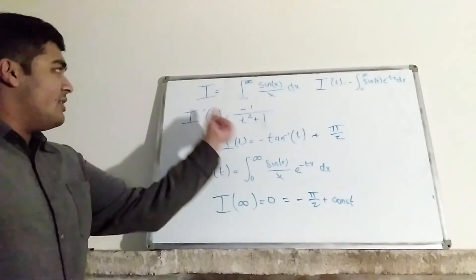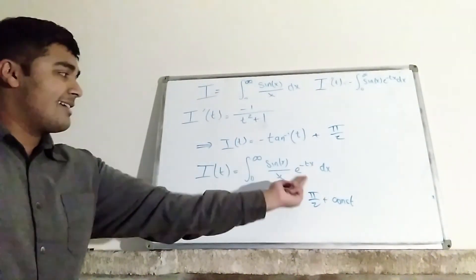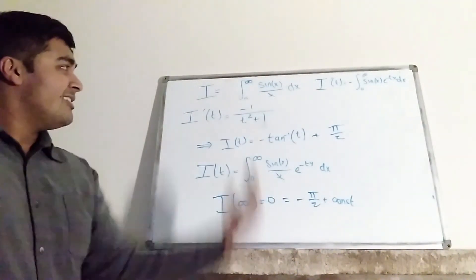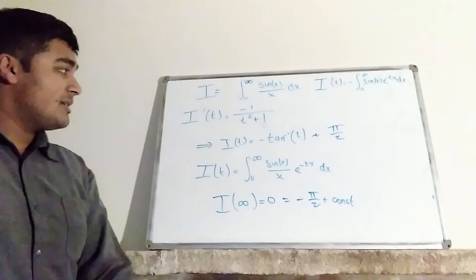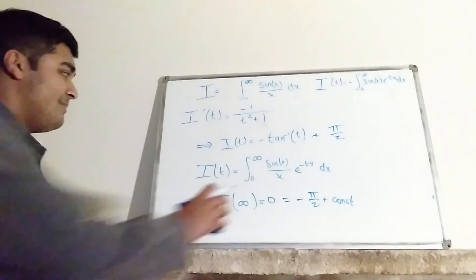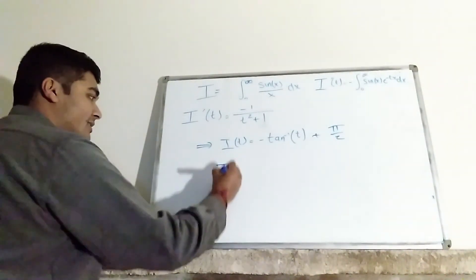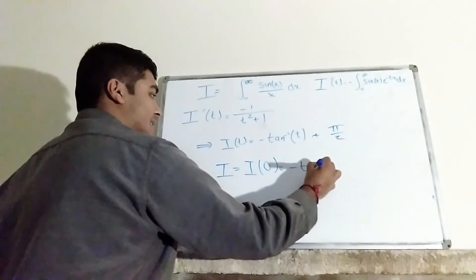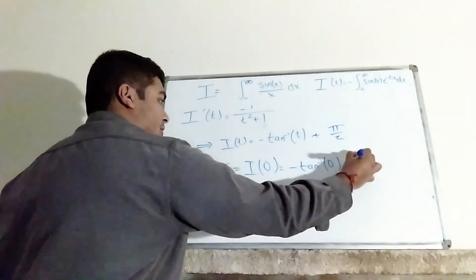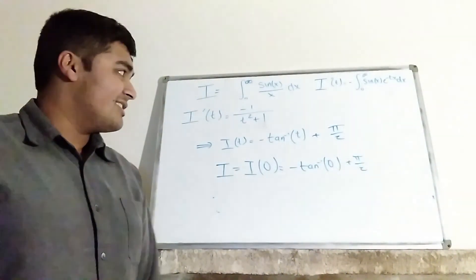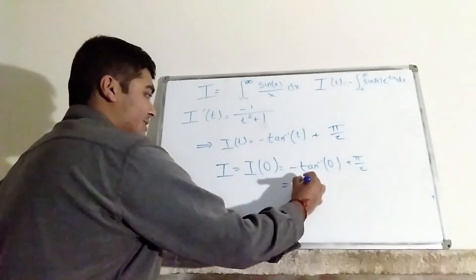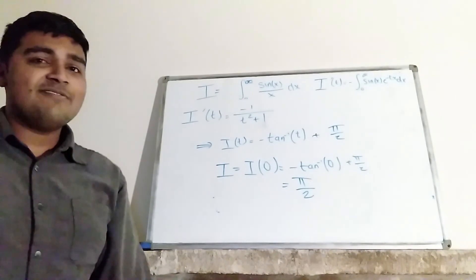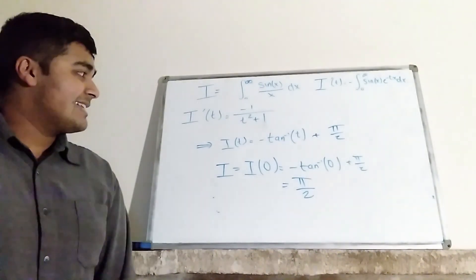Now I just need I(0), because putting t equals 0 into I(t) gives the integral from 0 to infinity of sin(x) over x dx — precisely what I want. Plugging in t equals 0: I(0) equals minus arctan(0) plus π/2. Since arctan(0) is 0, this is π/2. So the integral from 0 to infinity of sin(x) over x dx equals π/2.